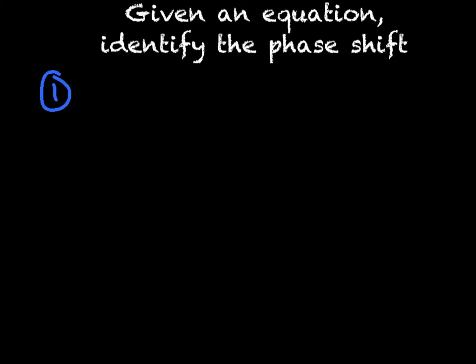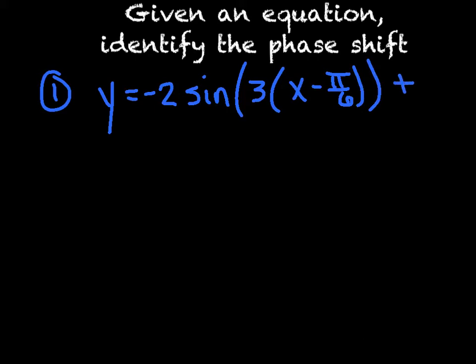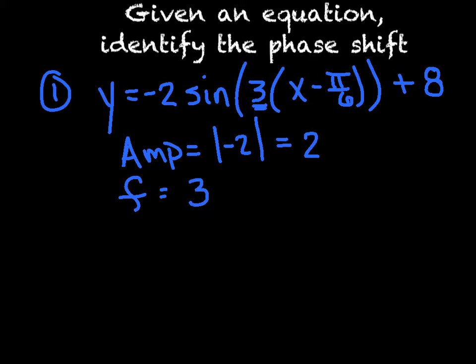I've got three examples here where we're going to be given an equation and we're going to identify the phase shift. In fact, I want you to find the values of not only the phase shift, but also the amplitude, the frequency, the period, and the vertical shift. My first one says y equals negative 2 sine of the quantity 3, and then another parenthesis x minus pi over 6, and then we'll wrap up two closing parenthesis plus 8. This is obviously the easiest of the three, we're always going to start with the easier one. Do you notice how there's already two sets of parenthesis? That's a good thing for you.